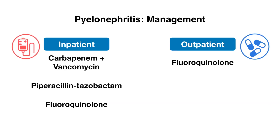So how do we manage pyelonephritis compared to urinary tract infections? This really depends on whether the patient requires inpatient versus outpatient care. Inpatient management is recommended when the patient is septic or critically ill, unable to maintain oral hydration, or when an obstructive process like a stone is suspected. If a patient is admitted and critically ill, we can treat with carbapenem and vancomycin — carbapenem for its anti-pseudomonal activity and coverage against ESBL-producing organisms. Vancomycin is included to cover methicillin-resistant Staph aureus. Otherwise, patients can be treated with piperacillin-tazobactam or a fluoroquinolone, as both have anti-pseudomonal activity.